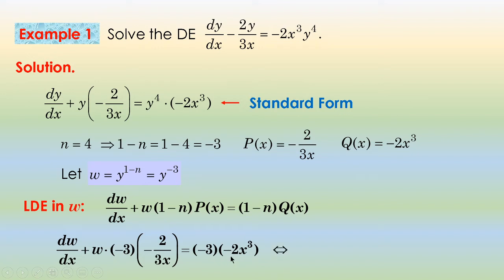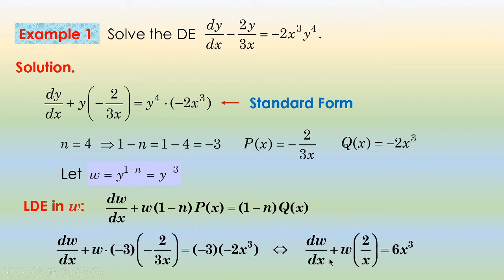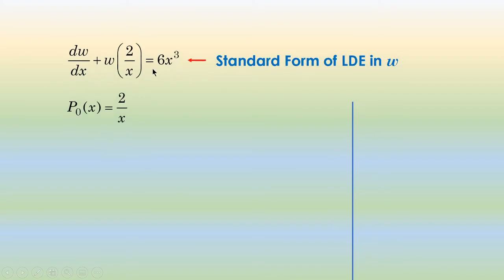Let us simplify this equation. The (−3)·(−2/(3X)) term simplifies — the 3s cancel — giving 2/X. On the right side, (−3)·(−2X³) gives 6X³. Hence, the LDE in W is: dW/dX plus W·(2/X) equals 6X³. This is the LDE in W written in its standard form, where P₀(X) equals 2/X (the coefficient of W) and Q₀(X) equals 6X³ (the right side).